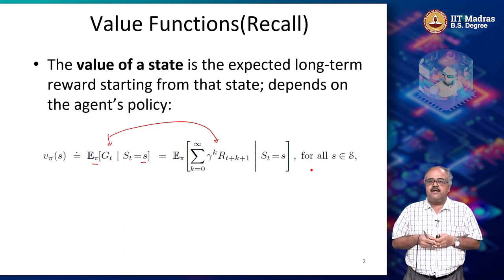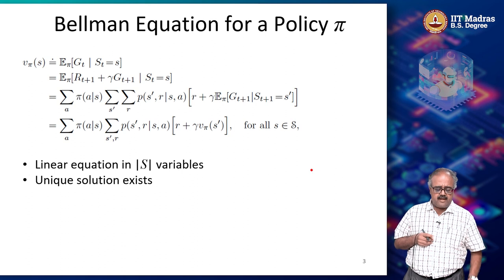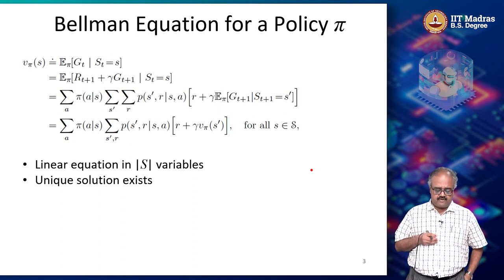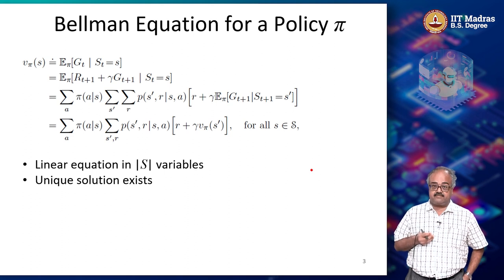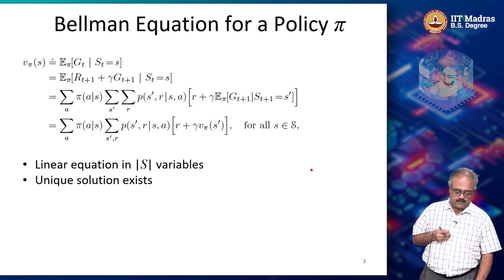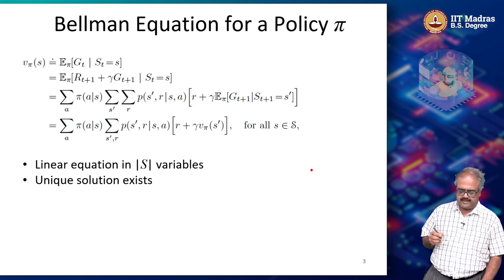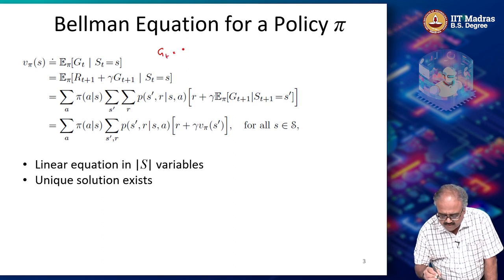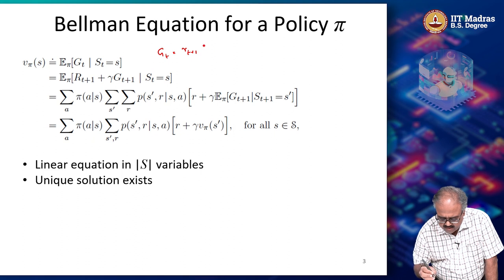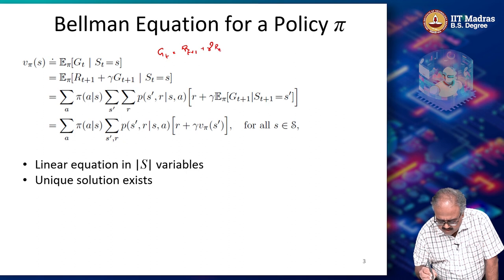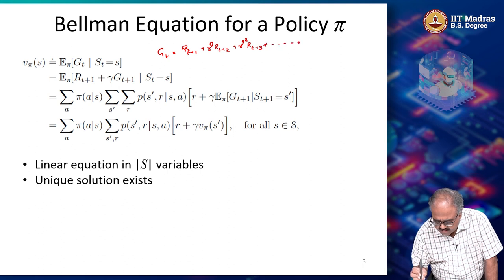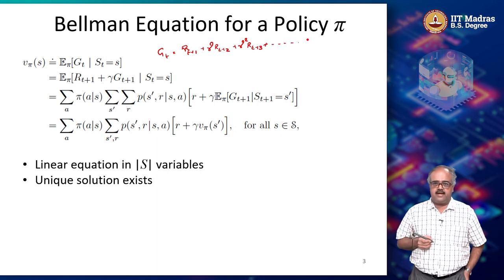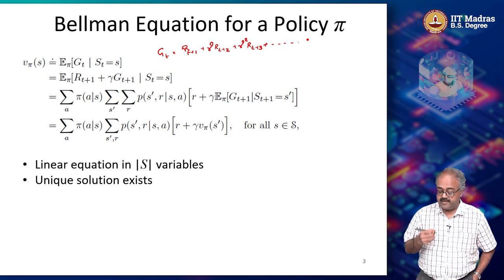This is where we left off in the last lecture. Let us look at something called the notion of the Bellman equation. We will take the expression for G_t. What is the expression for G_t? It is R_{t+1} plus gamma R_{t+2} plus gamma squared R_{t+3} plus dot dot dot. That is basically what the expression for the return is.